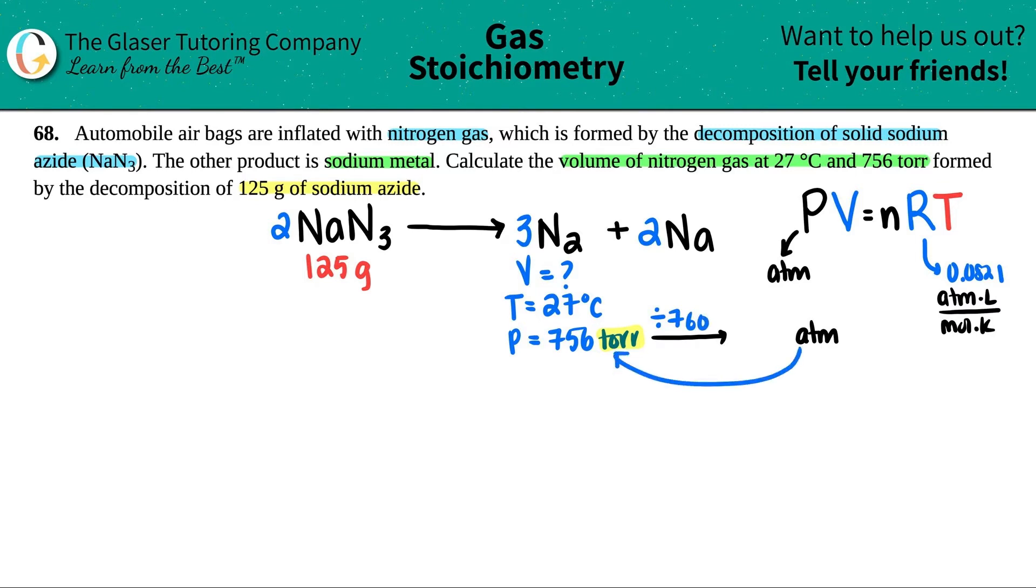So if you need to go from torr to ATM, all you got to do is just divide by 760. If you were going vice versa, you would times by 760. So in this case, I'm going to take my 756 and divide by 760. I'm going to try not to round as much because this is not the final answer. So you always want to have more sig figs than needed. It's 0.9947, we'll say four. That's good enough. And now we know the pressure.